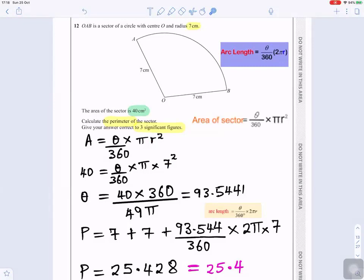So we have to solve this to find what the angle is. You can rearrange it to make the angle the subject. So it would be 40 times 360 divided by 7 squared is 49 times pi. So that gives you 93.5441. So that's the angle.